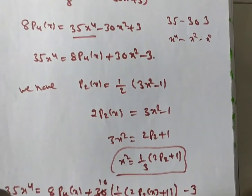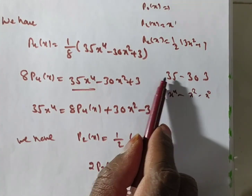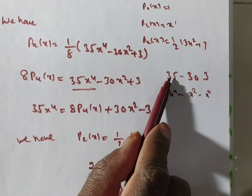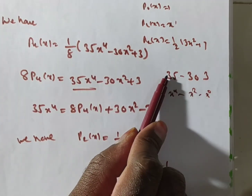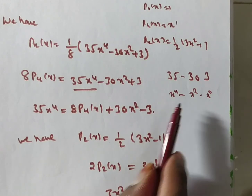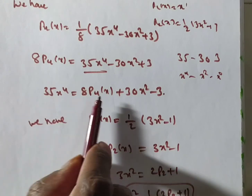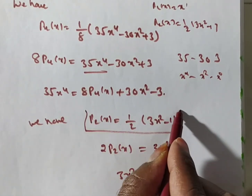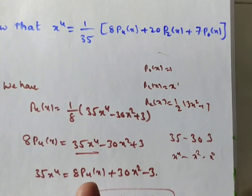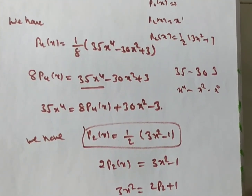Friends, to summarize: remember P₀ through P₄, and for P₄ remember the coefficients 35 and 3 with alternating signs across even powers. First isolate the highest power term using P₄, then express x² using P₂. Similarly, you can find expressions for x³, x^(1/2), x⁶, and other polynomials in this way very easily. Thank you for watching this video.